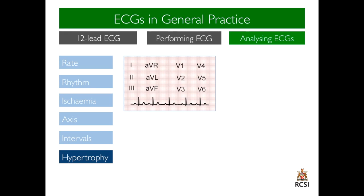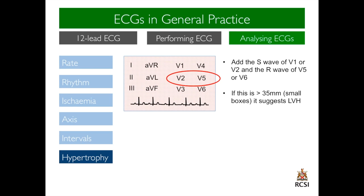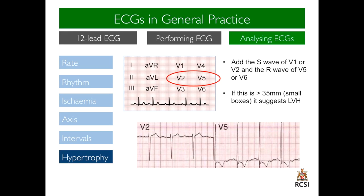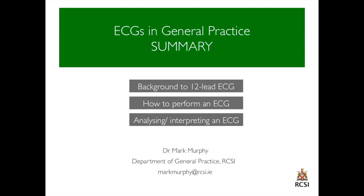Lastly, in general practice, particularly in terms of hypertension monitoring, left ventricular hypertrophy is often looked for. One mechanism involves looking at V1 and V5. If the S wave of V1 and the R wave of V5 or V6 is over 35 small boxes or millimetres, this is suggestive of left ventricular hypertrophy. This concludes this summary video of ECGs in general practice. Thank you.